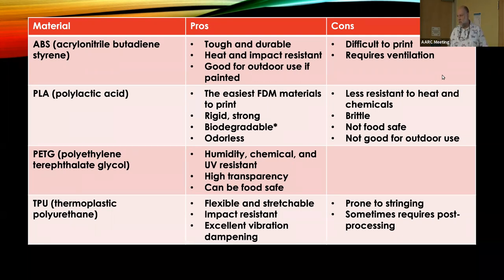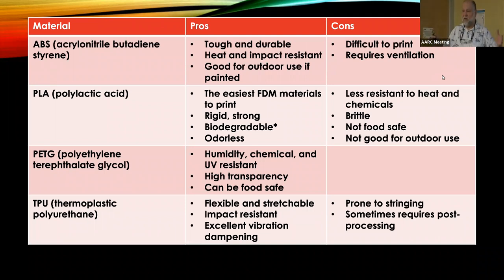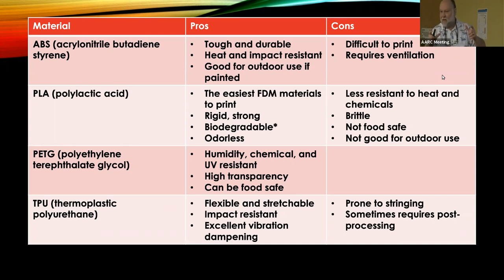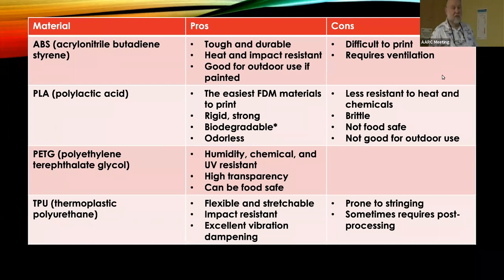ABS is incredibly tough — it probably takes a million years to break down in a landfill. But it's tough to print. You have to control the environment carefully. Most people who print ABS have a heated enclosure around their printer to maintain steady temperature with no drafts. ABS doesn't like drafts — it'll crack. But it's good for outdoor use if you paint it, though it isn't UV resistant on its own.